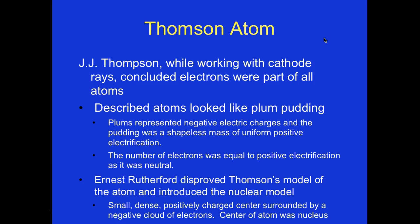J.J. Thompson, while working with the cathode ray, concluded that electrons were part of all atoms. He described atoms as looking like plum pudding — the plums represented negative electrical charges and the pudding was a shapeless mass of uniform positive electrification. The number of electrons was equal to the positive electrification, so it was neutral; electrons balanced the negative with the positive.